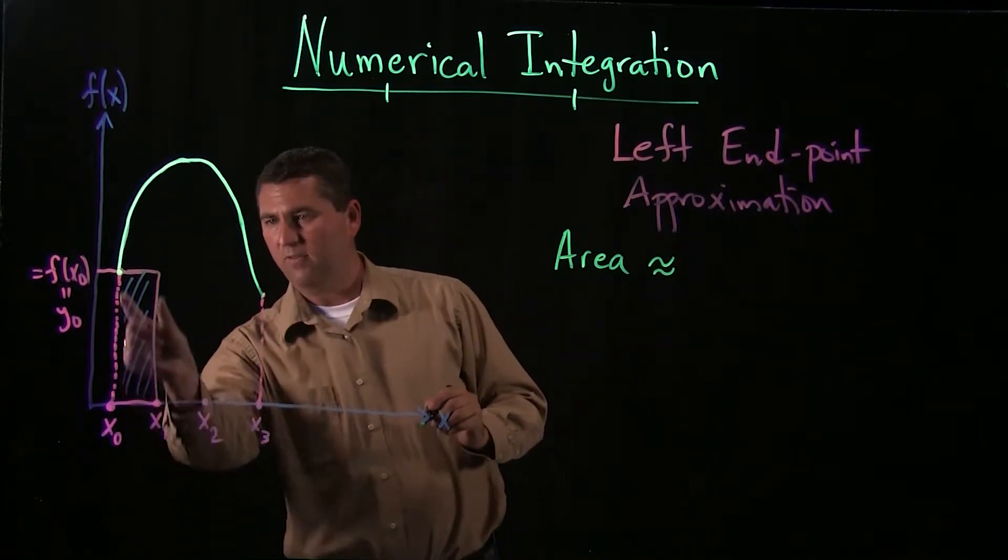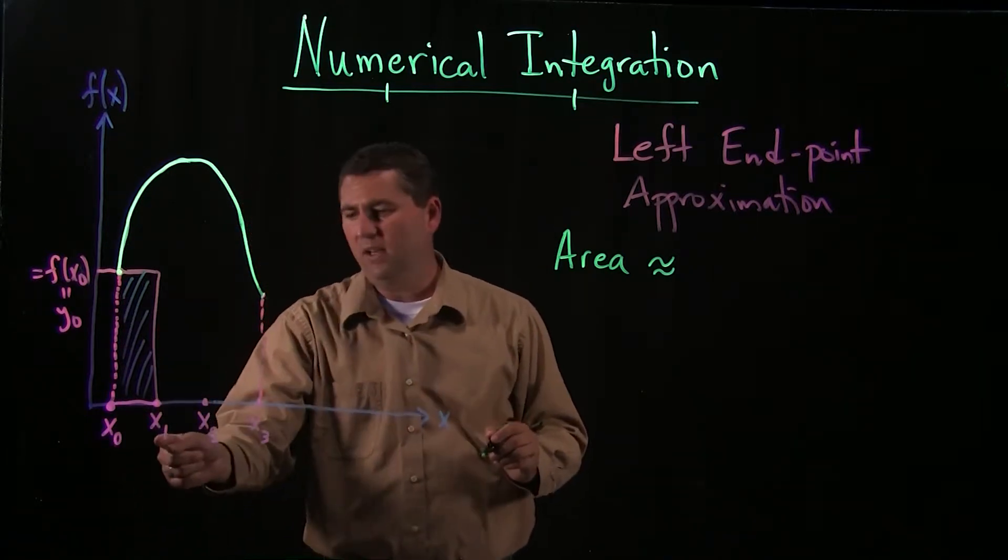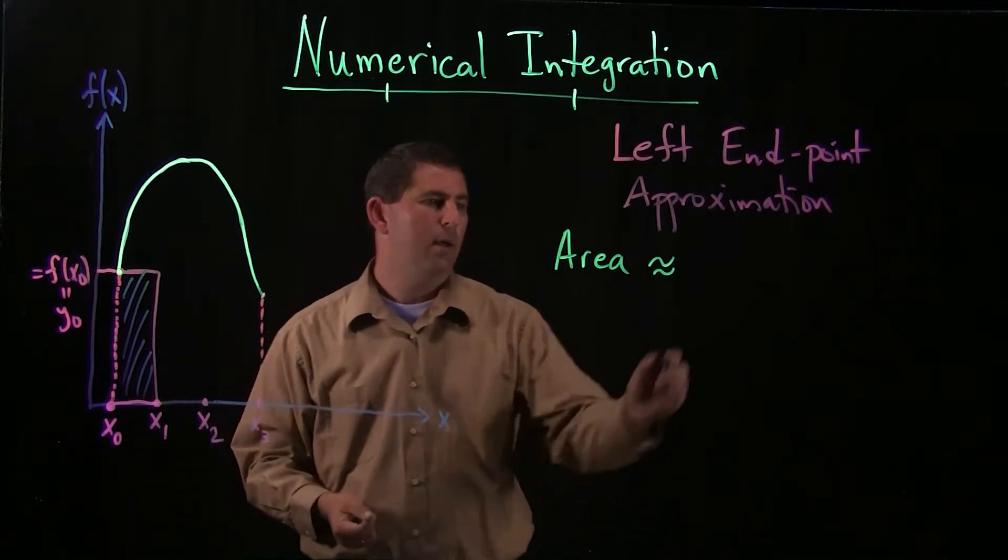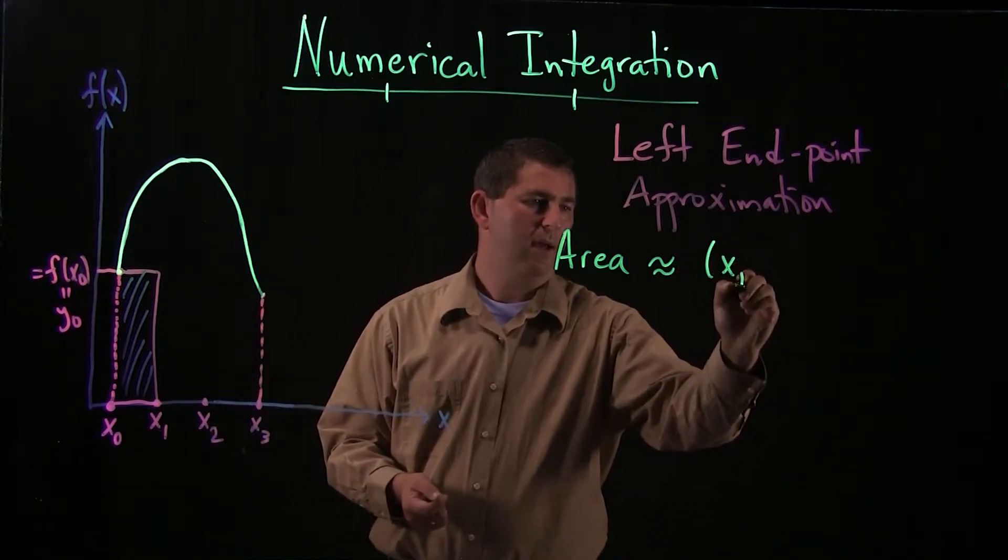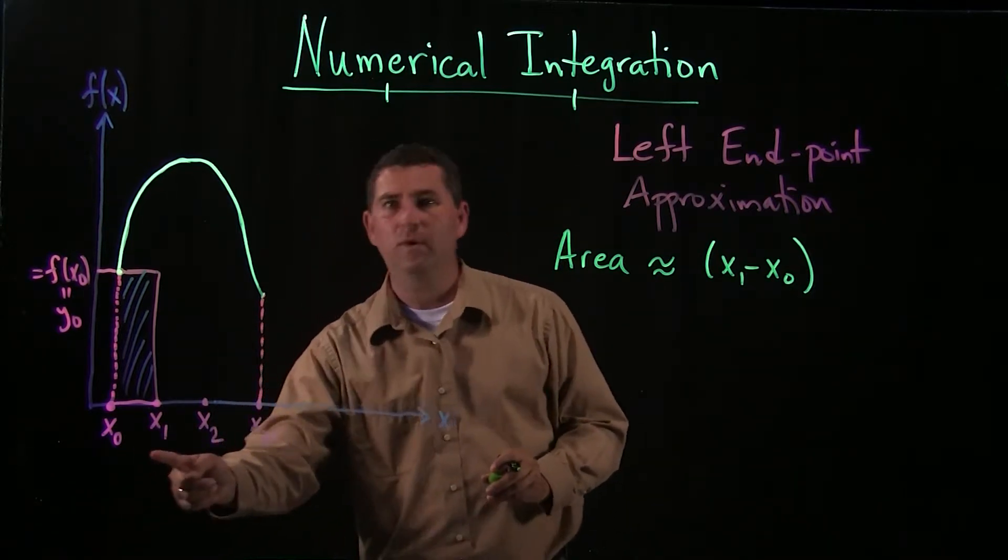So the area is going to be approximately. So we're going to take this first rectangle, which has base. Well, how long is it? Well, it's the distance from x0 to x1. So that's going to be x1 minus x0.